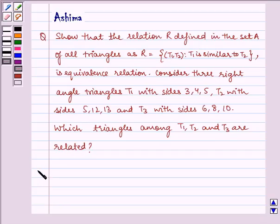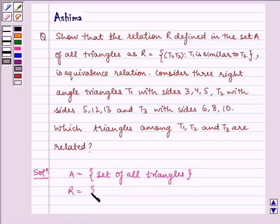Now let us proceed to the solution. Given to us: A = set of all triangles, and R = {(T1, T2): T1 is similar to T2}.